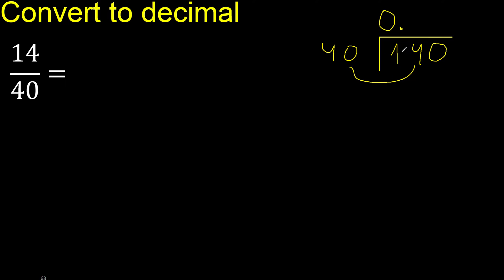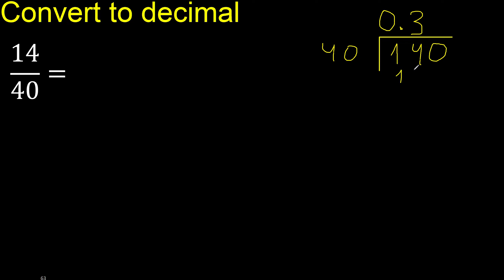140 is not less. 40 multiplied by which number is nearest to 140 but not greater? Multiply by 4 is greater; multiply by 3 is 120 — not greater. Subtract: 20.